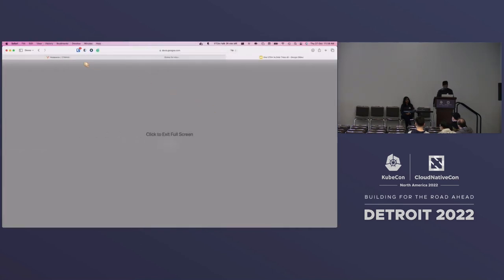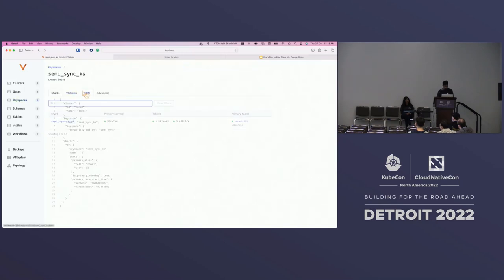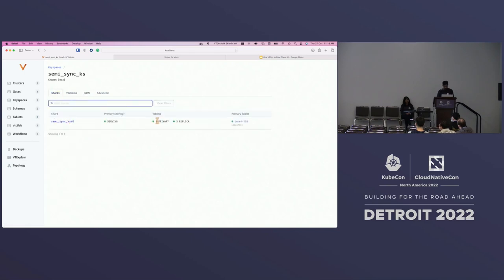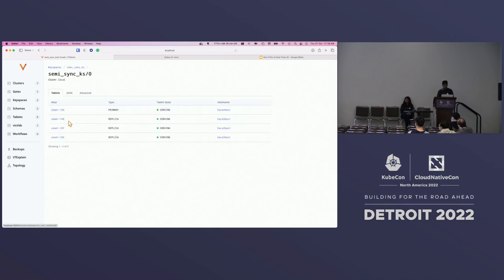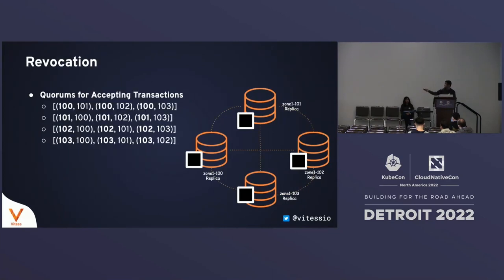Looking at the VTAdmin page, here is the SemiSync keyspace running with the SemiSync durability policy. We have four replicas, one of which has been promoted as primary. Looking at the quorums that can accept transactions: because any tablet can be the primary and any other tablet can send a SemiSync ACK, essentially any two tablets together can accept a write — one is the primary, the other sends the ACK. For example, 100 can be the primary and 101 can send the ACK, and that is enough to accept a write.